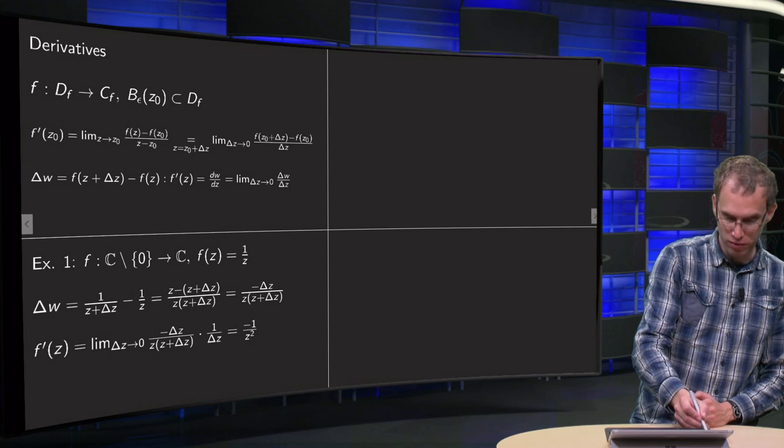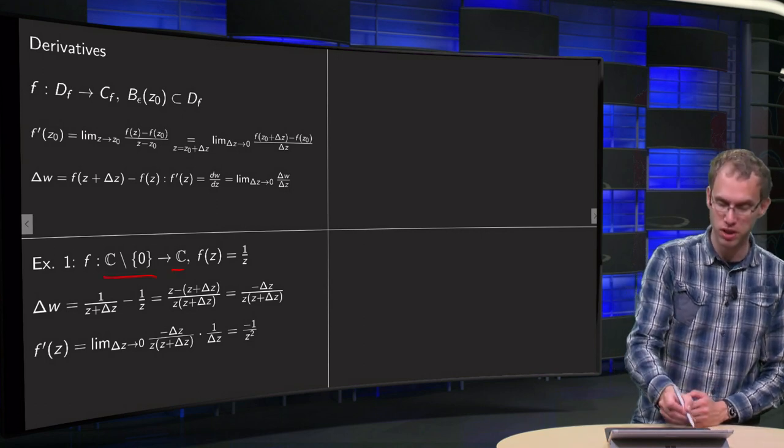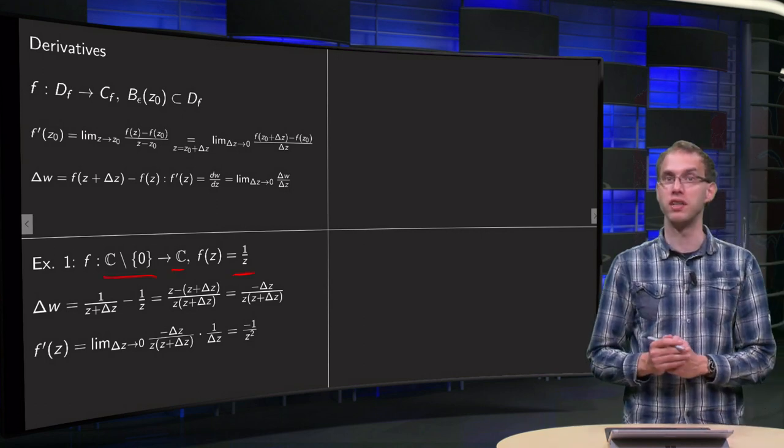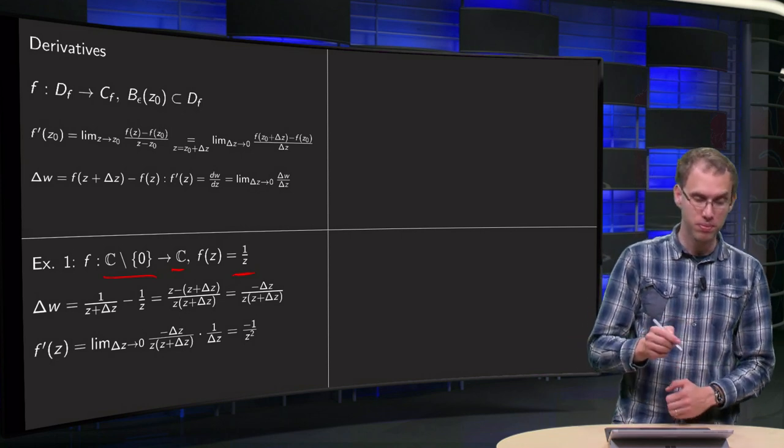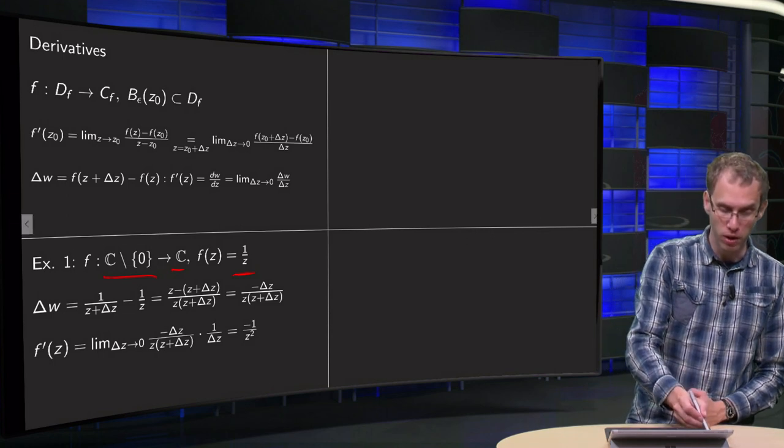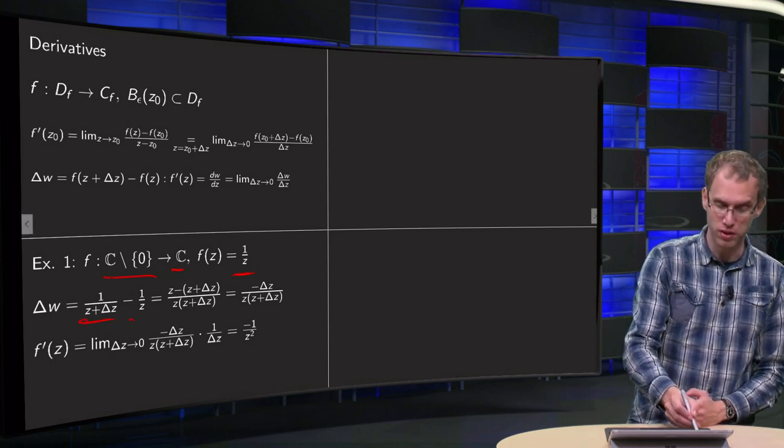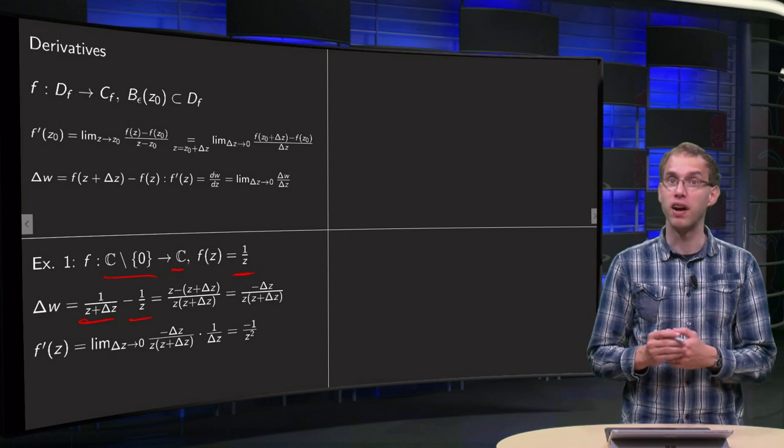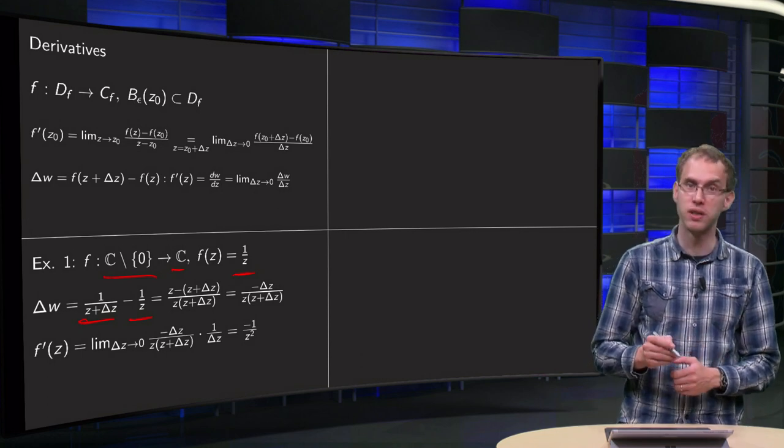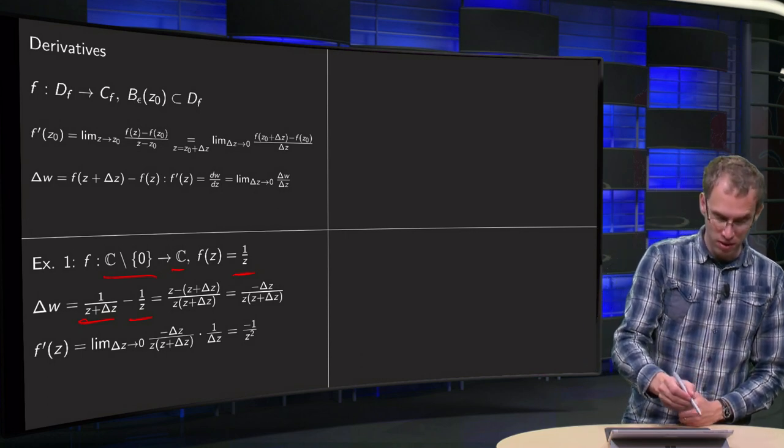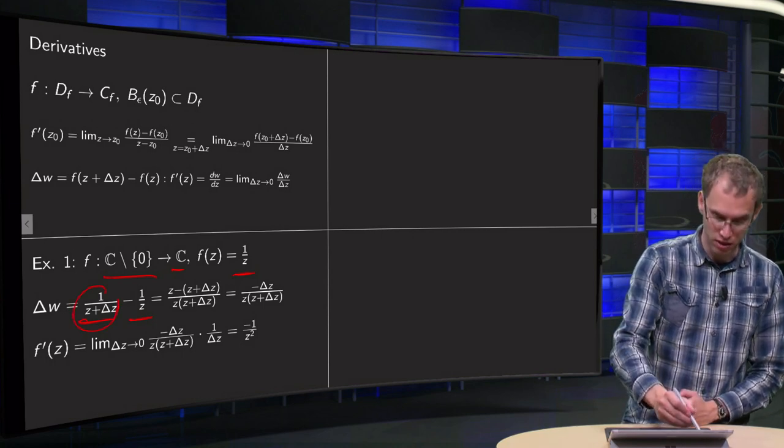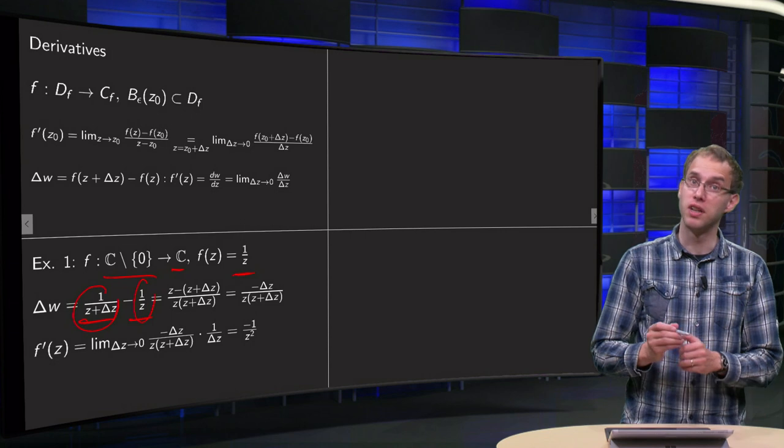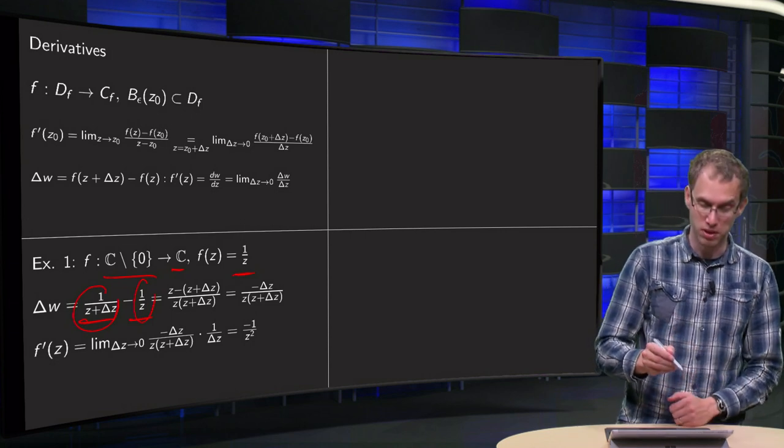Here we have a function from C without 0 to C, f of z equals 1 over z. We can use the definition and see what we get. So we compute delta w first: 1 over z plus delta z minus 1 over z. And we can simplify it, turn it into one fraction. Then this term becomes z over z plus delta z, and this term becomes z plus delta z over z times z plus delta z.